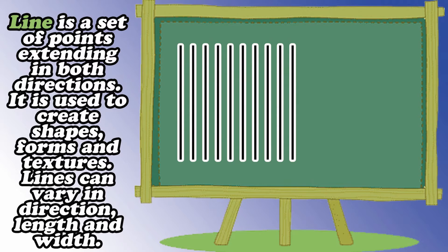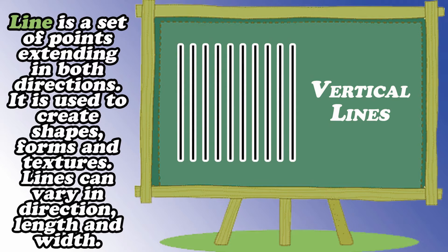Line is a set of points extending in both directions. It is used to create shapes, forms, and textures. Lines can vary in direction, length, and width. These lines are examples of vertical lines — in Filipino, ito ang tinatawag na mga linya o buhit na patayo. Vertical lines are straight up and down lines that are moving in space without any slant and are perpendicular to horizontal lines. They suggest height and strength because they extend towards the sky and seem unshakable.